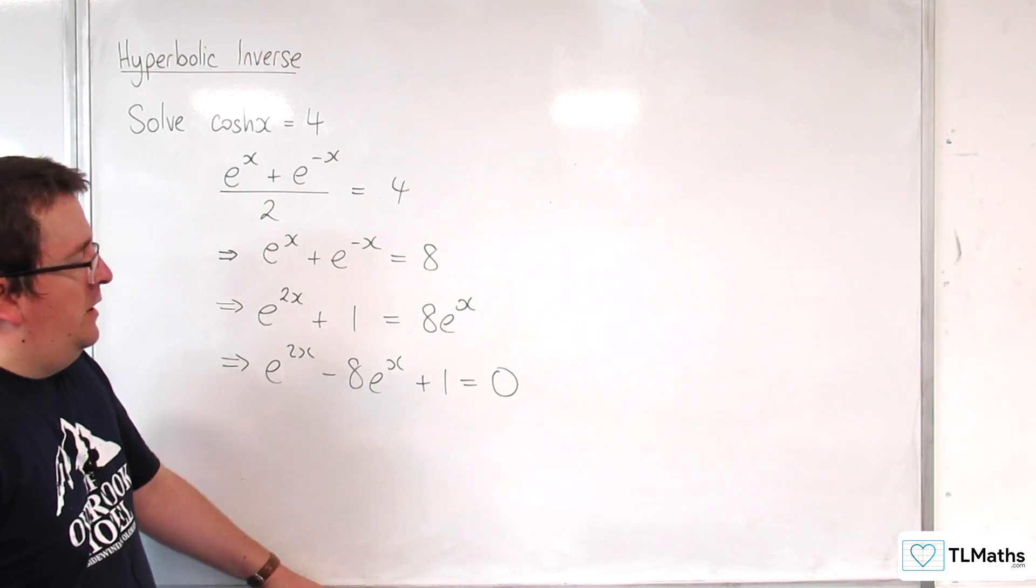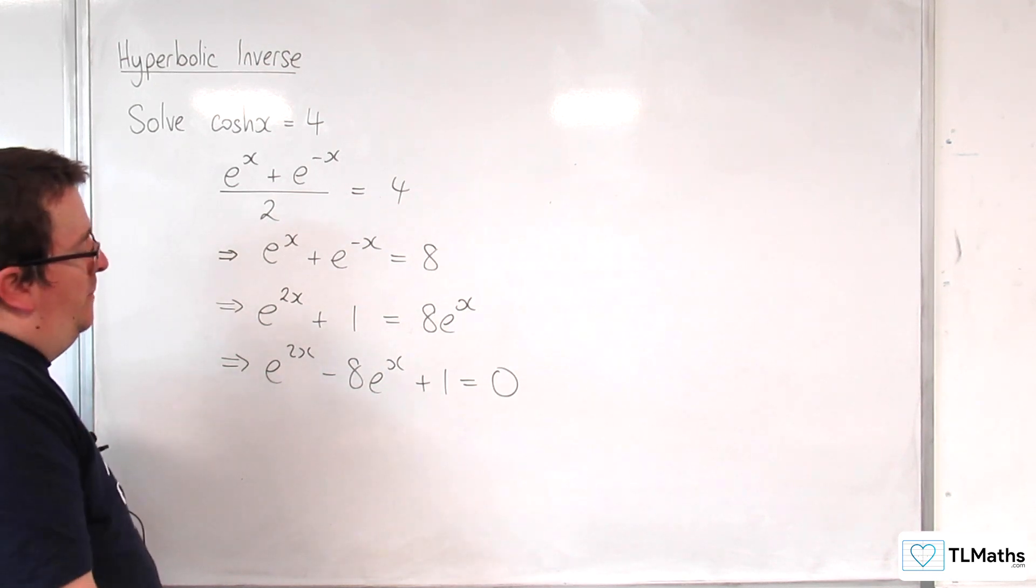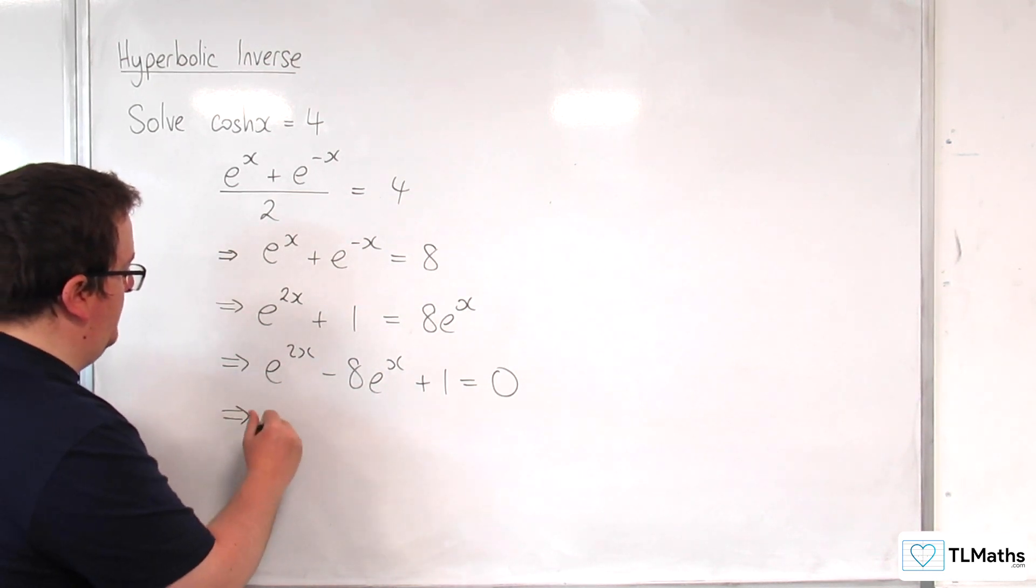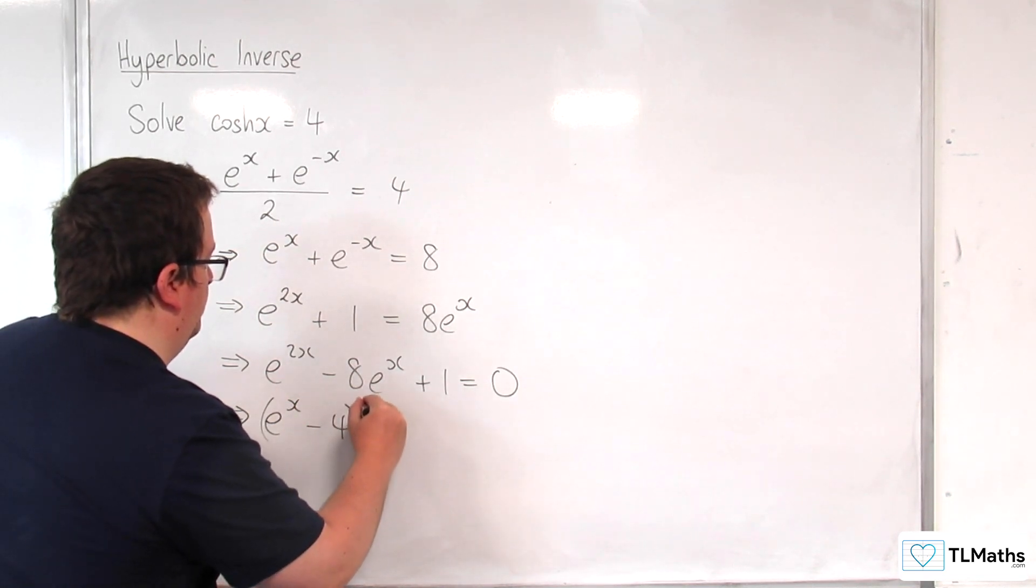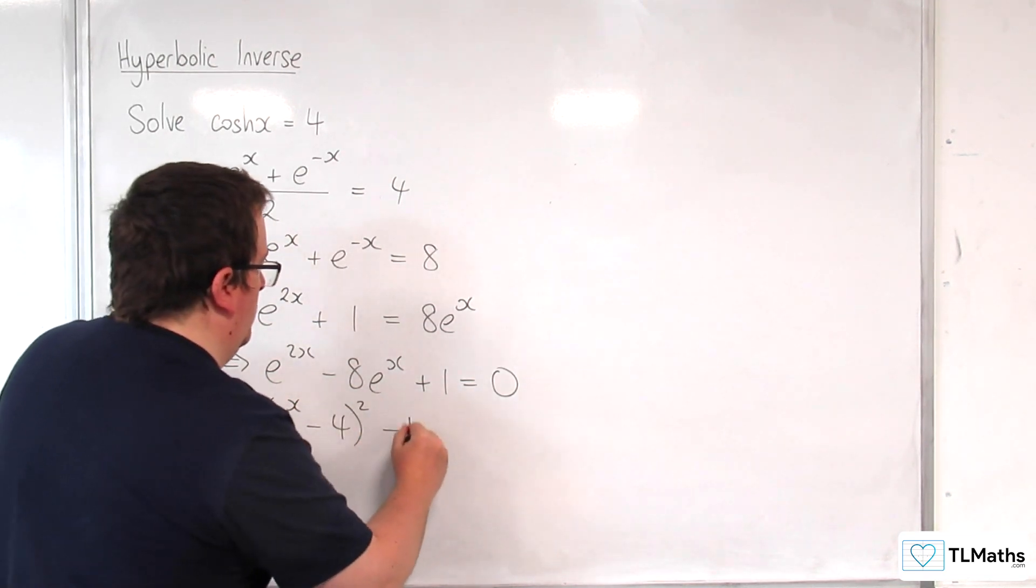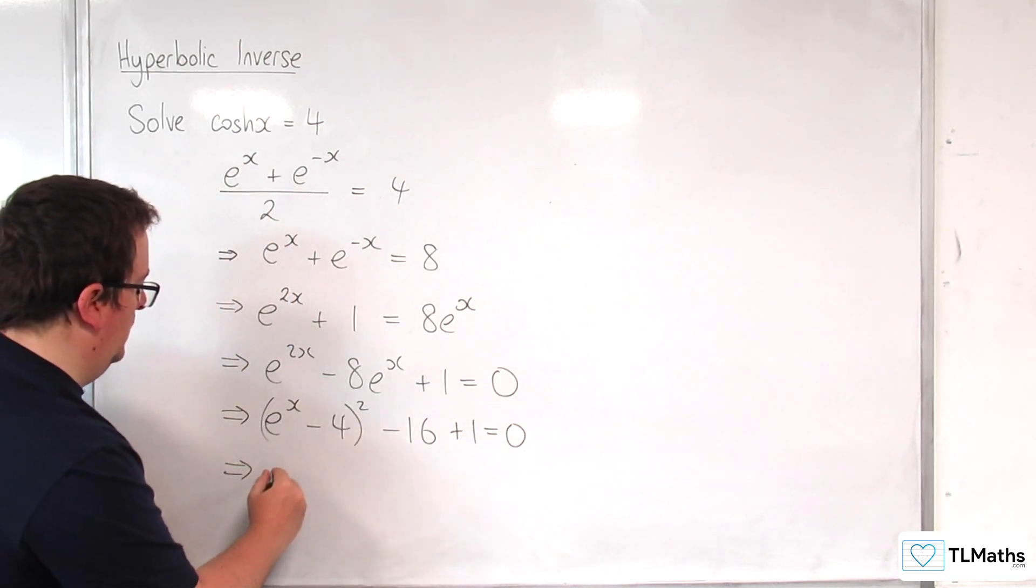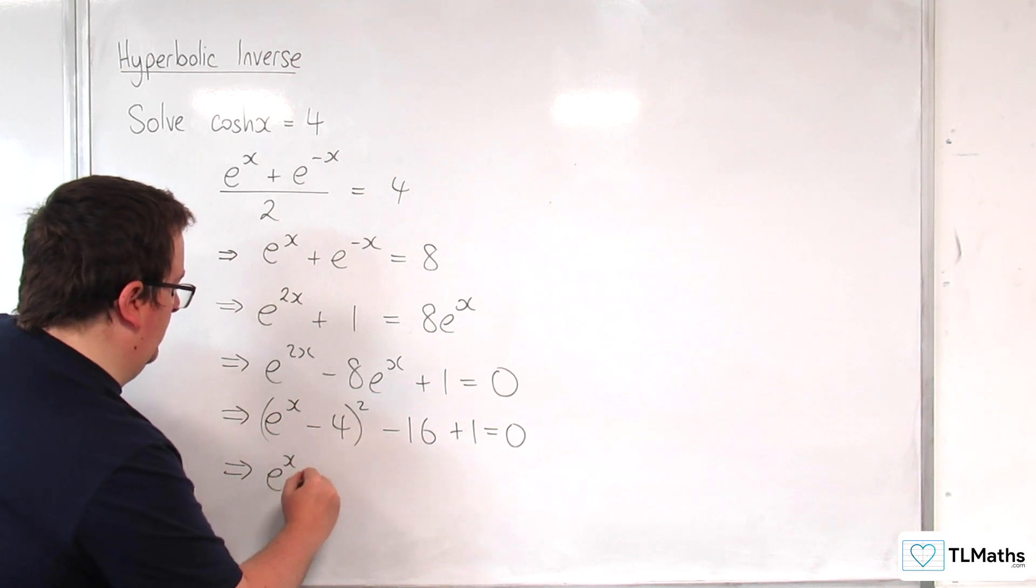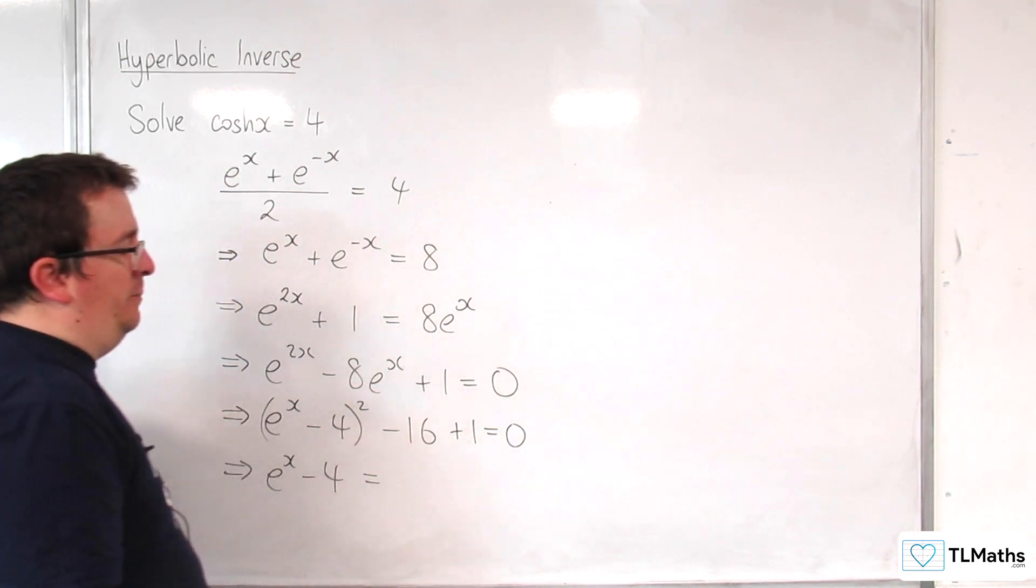Okay, so what I can do now is I could use the quadratic formula or I'm going to complete the square. So e to the x take away 4, e to the x take away 4 will be equal to minus 16 plus 1 is minus 15.